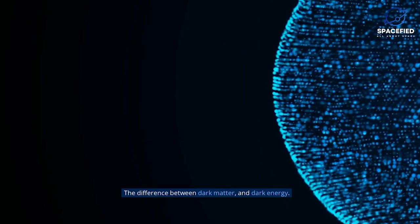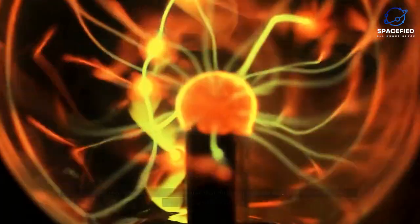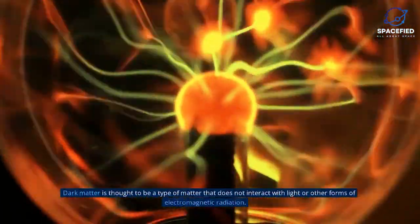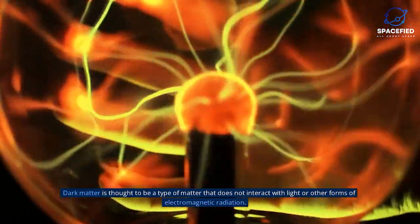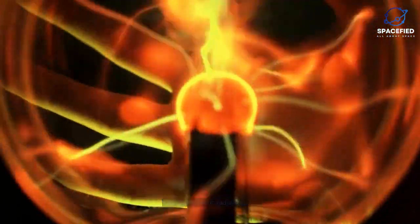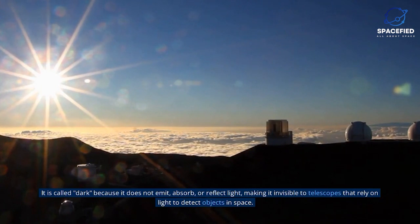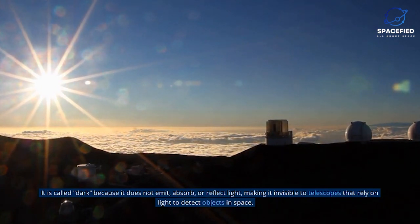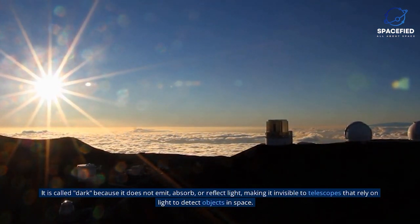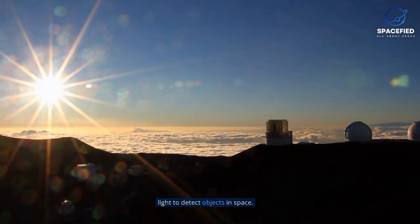The difference between dark matter and dark energy. Dark matter is thought to be a type of matter that does not interact with light or other forms of electromagnetic radiation. It is called dark because it does not emit, absorb, or reflect light, making it invisible to telescopes that rely on light to detect objects in space.